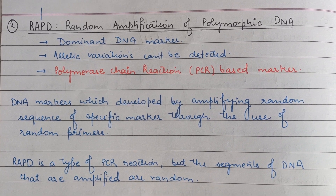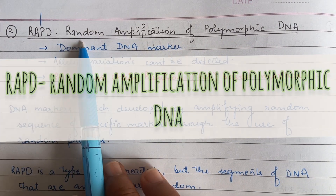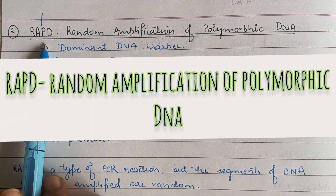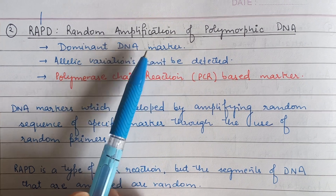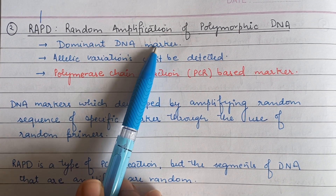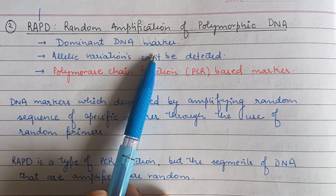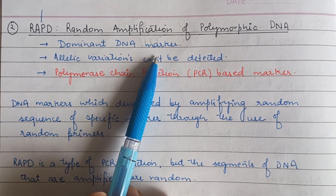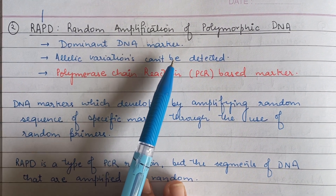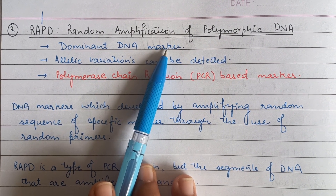Hey friends, in this video we are going to study about RAPD, which is random amplification of polymorphic DNA. It's a dominant DNA marker. DNA markers are specific sequences of DNA which are repeated two or more times, and there are multiple variants present in different individuals that can be detected. So they are used as a marker.